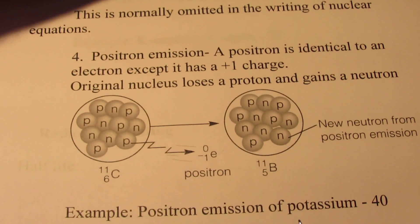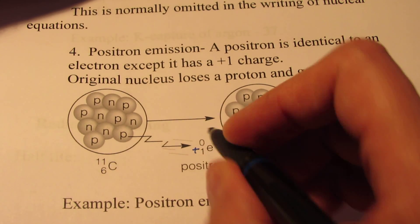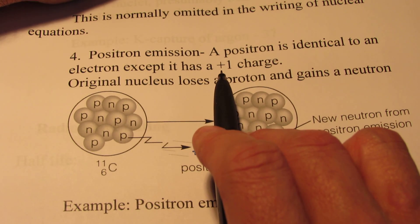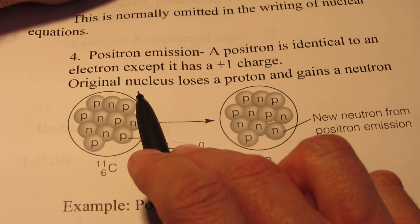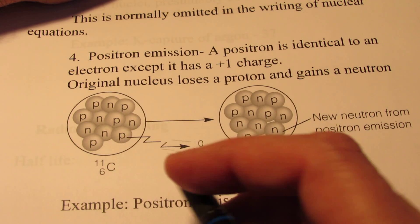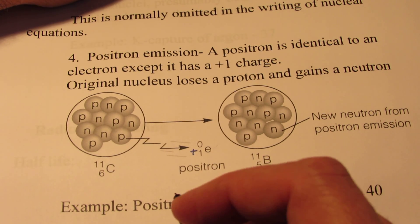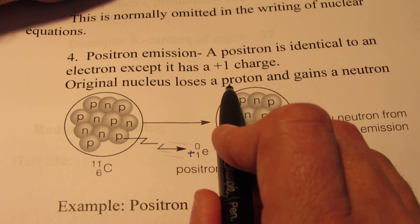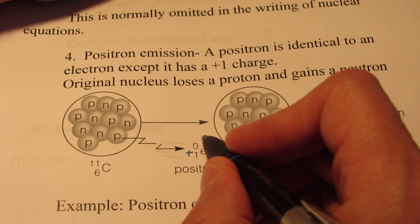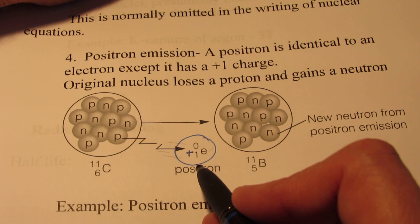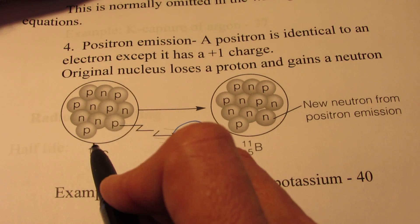Once in a while you'll run into positron emission. And in positron emission, it's identical to an electron, except you're kicking off a positive charge instead of a negative charge. So the original nucleus will lose a proton and it will gain a neutron. So it's sort of like beta emission, it's the opposite though. You see, instead of a neutron turning into a proton, we now have a proton turning into a neutron. So we need to kick out a positively charged particle. So again, it's moving at a very high rate of speed, so it carries quite a bit of energy with it.